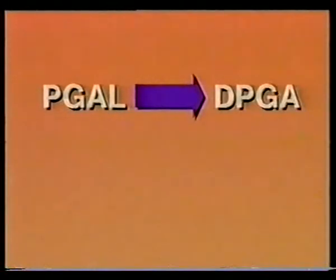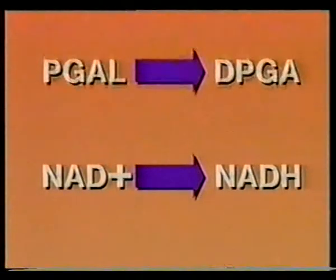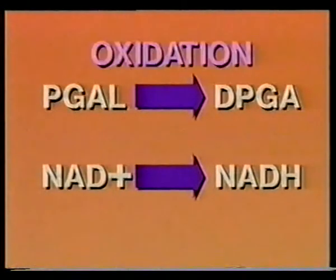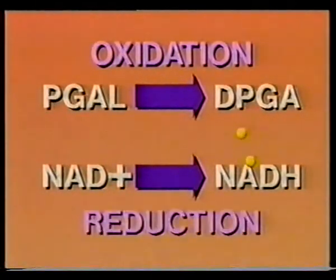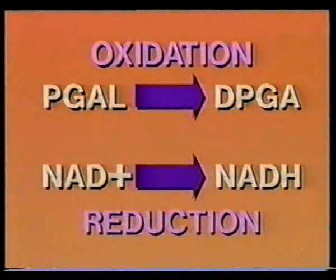Recap in chemistry: PGAL, having released electrons, is oxidized. And NAD+, having gained electrons, is reduced. So, oxidation reactions release energy, while reduction reactions store energy.